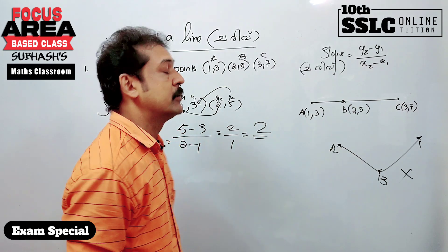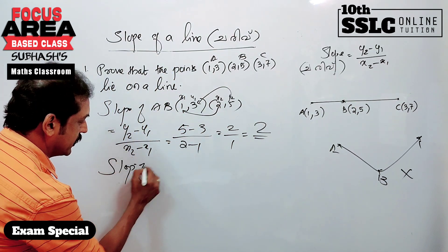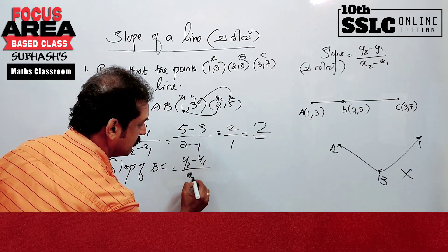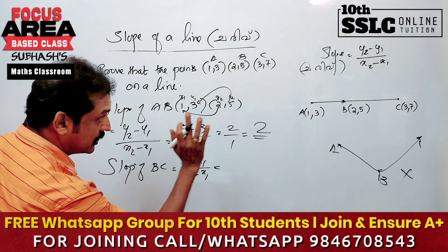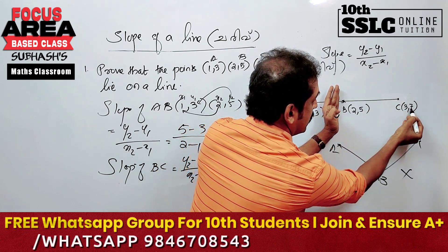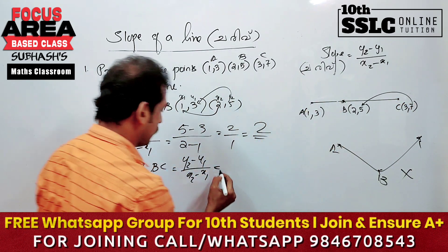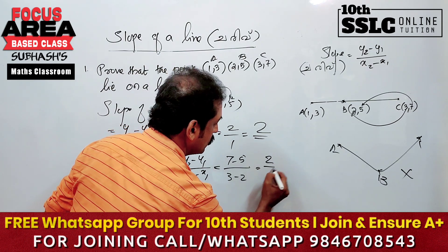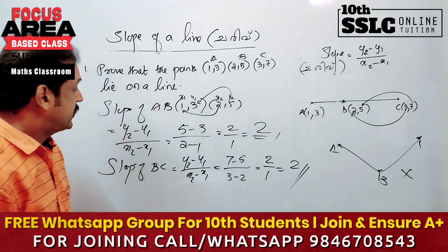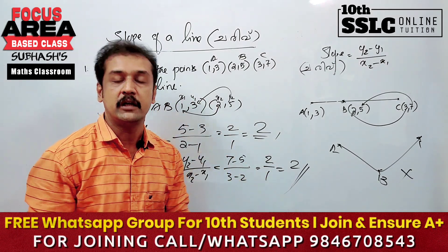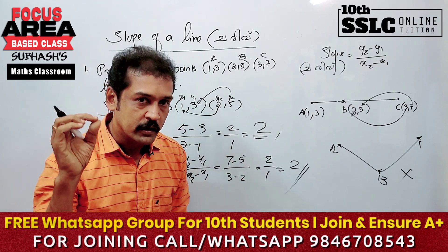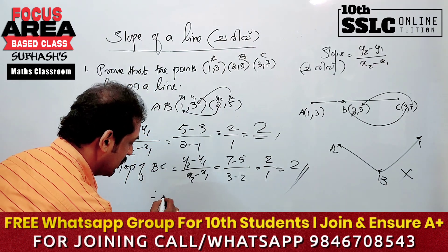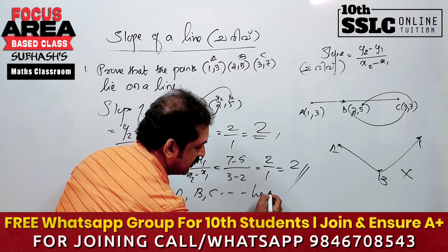Next, the slope of BC. Using the same formula y2 minus y1 by x2 minus x1, with B and C: that is 7 minus 5 by 3 minus 2, which equals 2 by 1 — equal to 2. Since slope of AB equals slope of BC, the given points lie on a straight line.